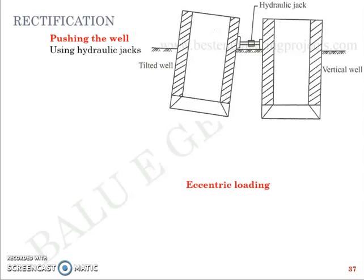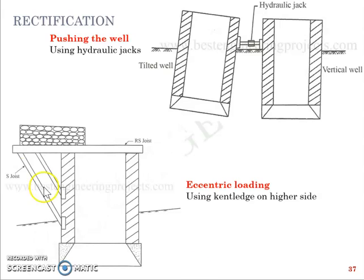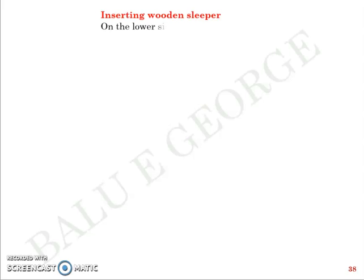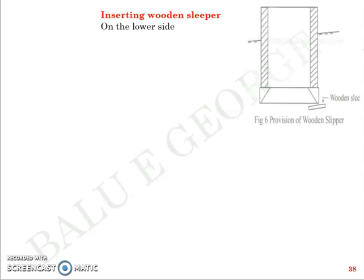Method number two is eccentric loading using a cantilever on one side. A cantilever here refers to dead weights, usually kept in sacks. In the field, you can use sacks filled with aggregates or metal pieces, placed as a cantilever on the required side to rectify the tilt. Method number three is inserting a wooden sleeper on the lower side of the well foundation beneath the cutting edge to try to rectify the tilt.